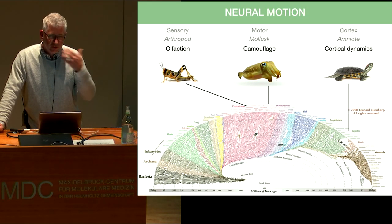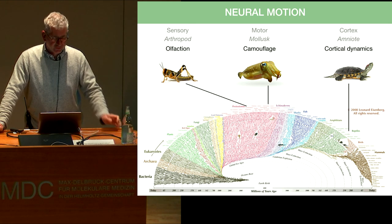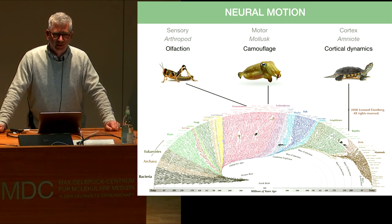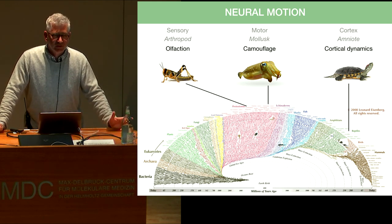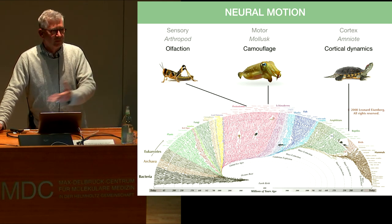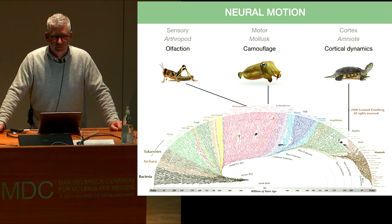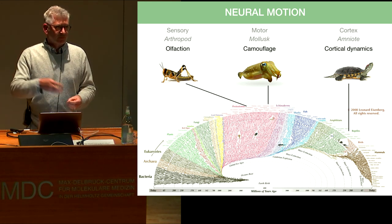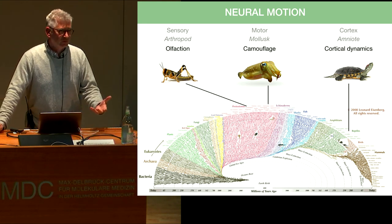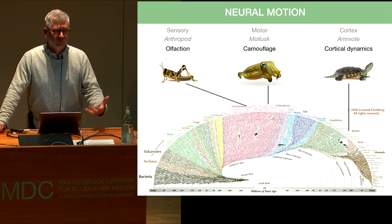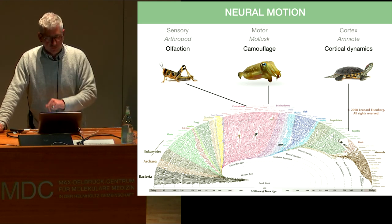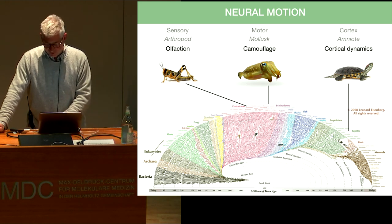What I'll talk about here is three systems that are completely different: an insect, a mollusk — a cephalopod — and then a vertebrate, a reptile. Three completely different nervous systems as well: one is an olfactory system, another is a motor system, and the last is a cortical system. But they all share certain aspects of dynamics of activity within them that I think might be related to one another. We'll start with the locust, go to the cuttlefish, and then finish with the turtle.